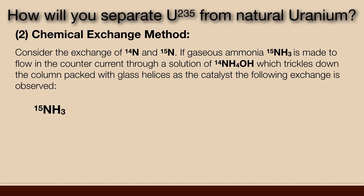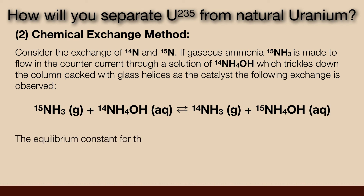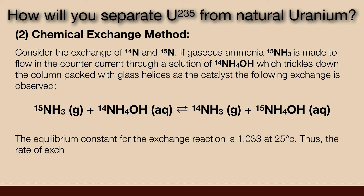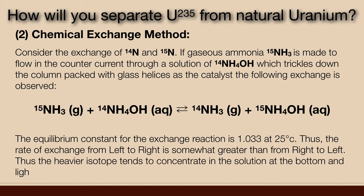Ammonia with nitrogen-15 in gaseous form combines with ammonium hydroxide with nitrogen-14 in aqueous form, producing ammonia of nitrogen-14 in gaseous form and ammonium hydroxide of nitrogen-15 in aqueous form. The equilibrium constant for the exchange reaction is 1.033 at 25 degrees Celsius. Thus, the rate of exchange from left to right is somewhat greater than from right to left. Thus, the heavier isotopes tend to concentrate in the solution at the bottom, and lighter isotopes in the gaseous state at the top.